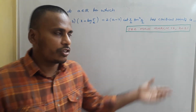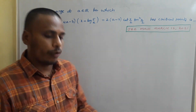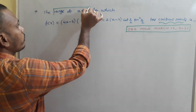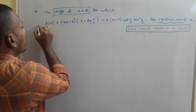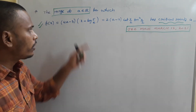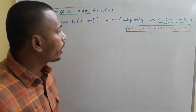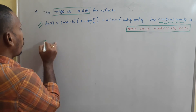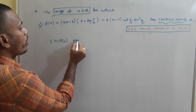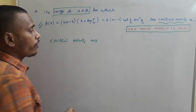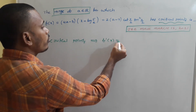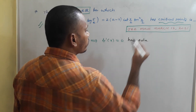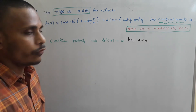The third problem is from JEE Mains March 16, 2021, related to maximum, minimum, and specifically critical points. We need to find the range of a ∈ ℝ for which the given function has critical points. Since it has critical points, f'(x) = 0 must have a solution, and we find the values of a for which this holds.